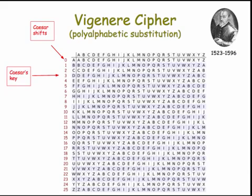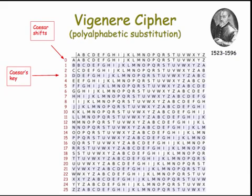In fact, this was done as far back as the 16th century, using a cipher that's come to be attributed to Blaise Vigenère. He didn't actually invent it, but his name has become associated with it.